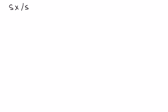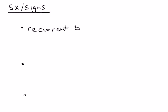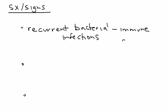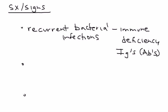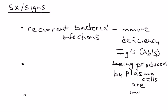Let's talk about the signs and symptoms of multiple myeloma. The first is recurrent bacterial infections. In multiple myeloma, you are in a state of immune deficiency because the immunoglobulins being produced by those plasma cells are actually ineffective. Because the immune system is not working properly, the person will be more prone to getting bacterial infections.